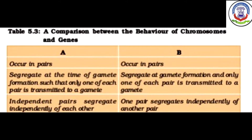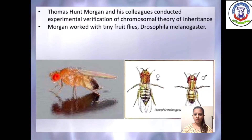Here you can see a table showing the comparison between chromosomes and genes. First, both chromosomes and genes occur in pairs. Second, for chromosomes, they segregate at the time of gamete formation such that only one of each pair is transmitted to a gamete — the same is true for genes. Third, chromosomes segregate independently of each other, and similarly, one pair of genes segregates independently of another pair.